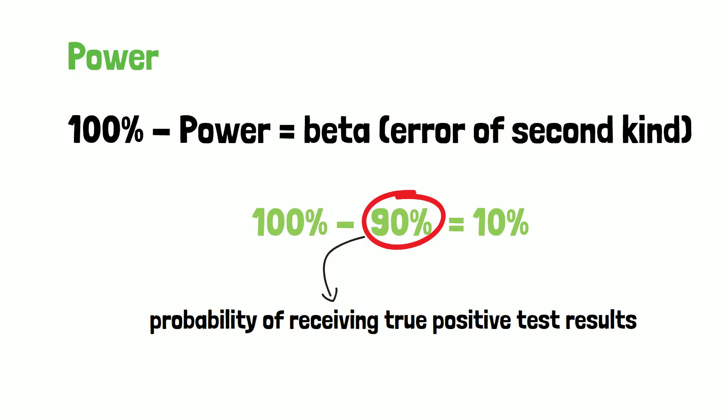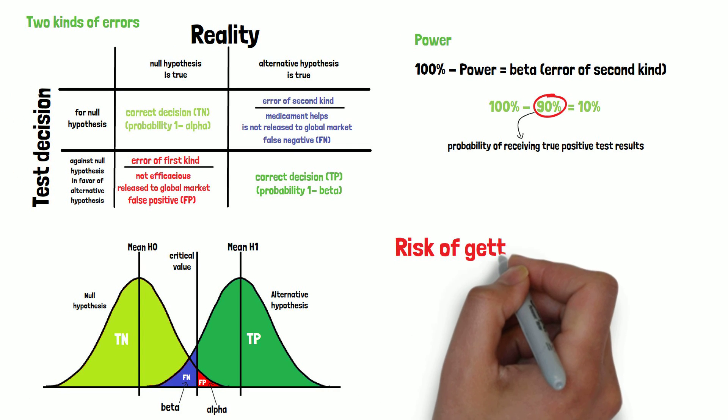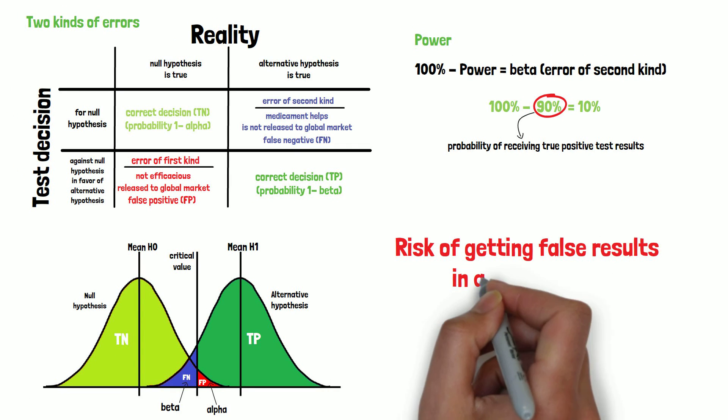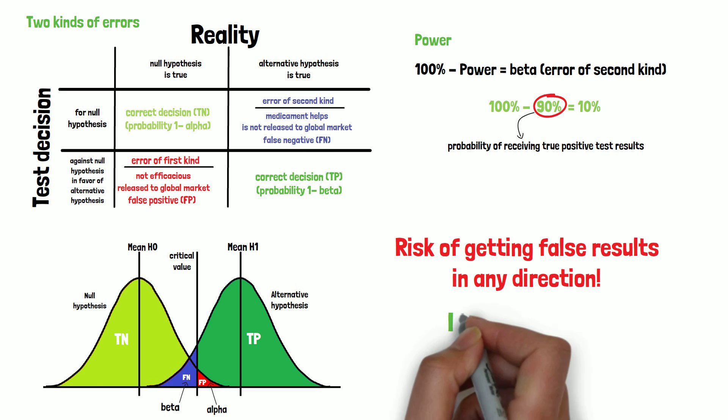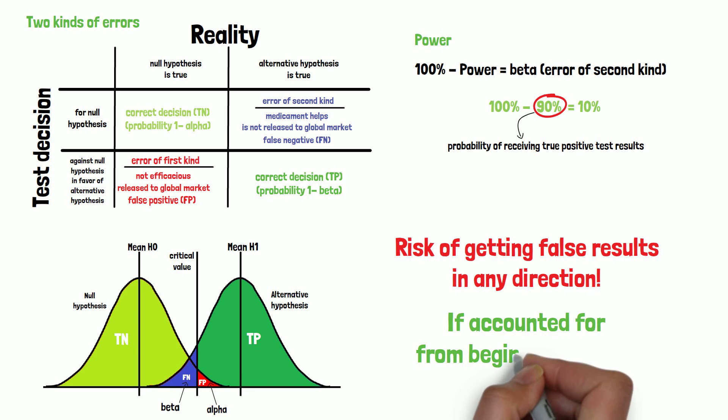So that is it for today. As you can see, there is always the risk to get false results in any direction within a clinical trial, but if they are accounted for from the beginning on, the risk is controllable.